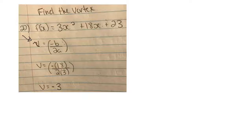So to find the x value of the vertex, you just go minus b over 2a. So negative, this would be b, this would be a. So negative 18 over 2 times 3, negative 18 over 6 would be negative 3. Perfect. So that's the x-coordinate of the vertex.